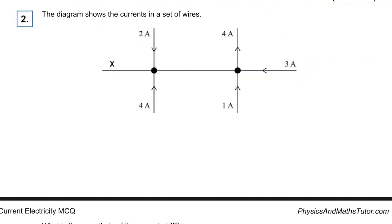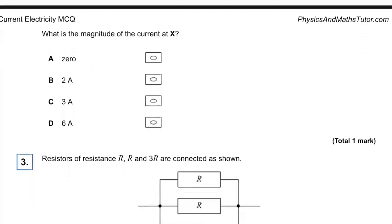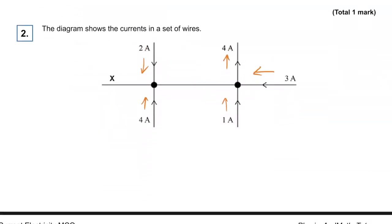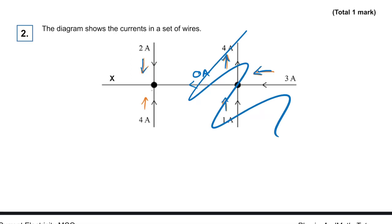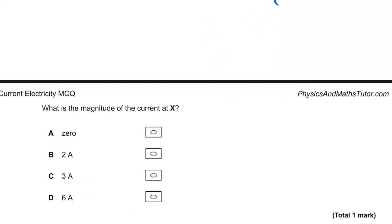Question two: we have current in a wire — this is going to be Kirchhoff's first law. Looking at the junction: three going in and one going in makes four going out, so there's zero amps along that branch. Then two amps going in here and four amps going in here, so there must be six amps going to the left through X. The answer is D.